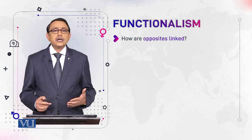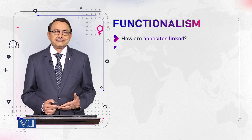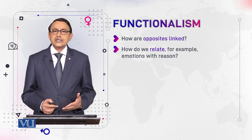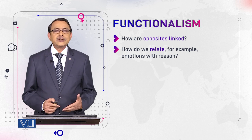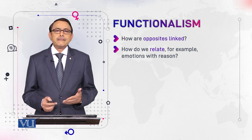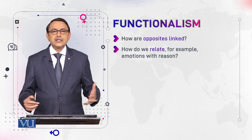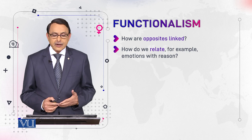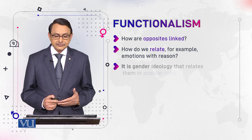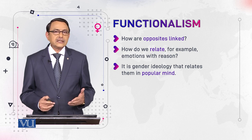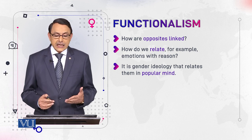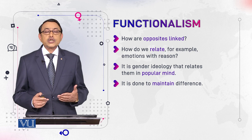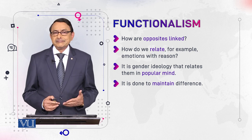The first question is: how are these oppositions linked with each other? How do we establish, for example, a relationship between emotions and reason — where reason is assigned to men and emotions are assigned to women? What connects these two opposite attributes? The answer is gender ideology, which relates them in the popular mind.